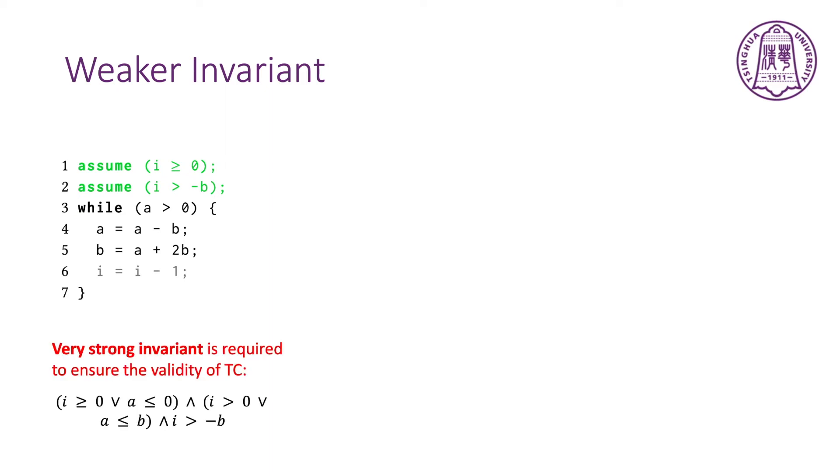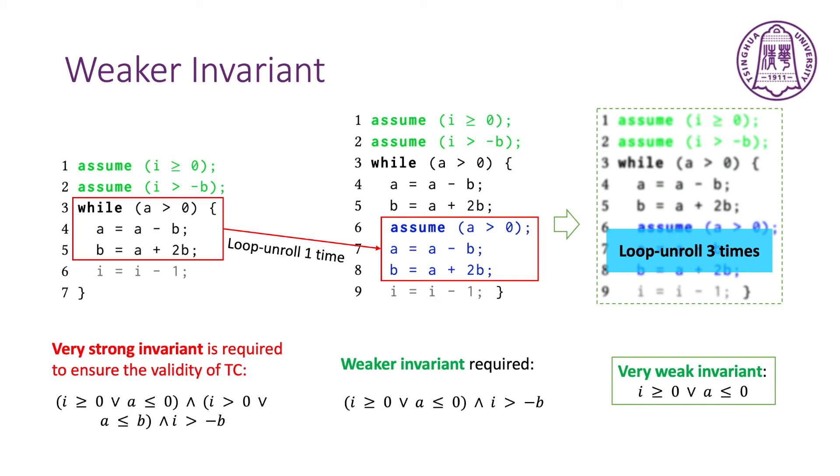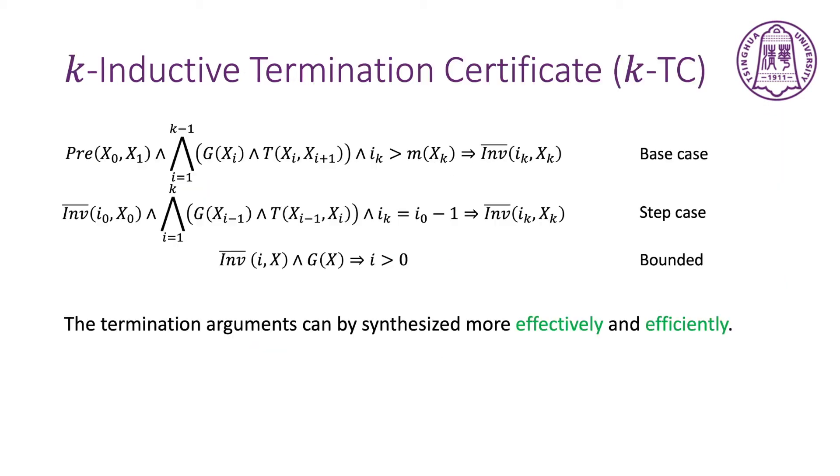On the other hand, for this program, a very strong invariant is required to ensure the validity of the TC. It is hard to be synthesized. But if we unroll the loop one time in the loop body, a weaker invariant is required. Moreover, if we unroll the loop three times, a significantly weaker invariant can be used. As we can see, once K-induction is integrated, the termination argument can be synthesized more efficiently and effectively.